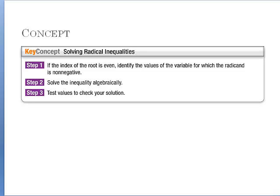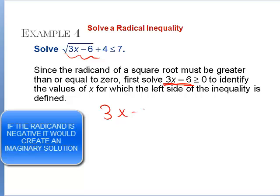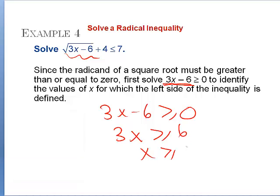The same sort of process applies for inequalities. Remember we still need to check, and if we are dividing, we have to change the direction of the inequality. The first thing to note is that the radicand of a square root must be greater than or equal to 0, so we solve that expression to be ≥ 0 to identify whether the inequality is even defined. We take 3x − 6 ≥ 0, giving 3x ≥ 6, so x ≥ 2. The expression is defined, so we can proceed.